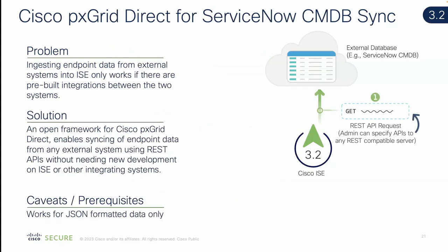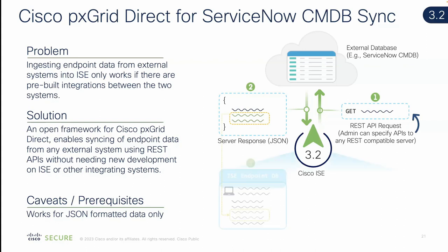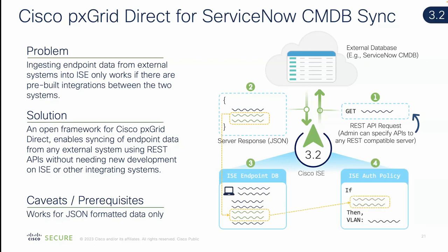That is exactly what we did with Cisco PXGrid Direct in ICE. This feature works not only with ServiceNow, but with any external database that can export its database tables in JSON format. ICE retrieves that database table from your CMDB, parses the JSON, puts it into our database, and replicates it out to all the ICE PSNs. It's then available for authentication and authorization rules, and in the authorization profile returned to the network device - VLAN, SGT, ACL, even IPSK.